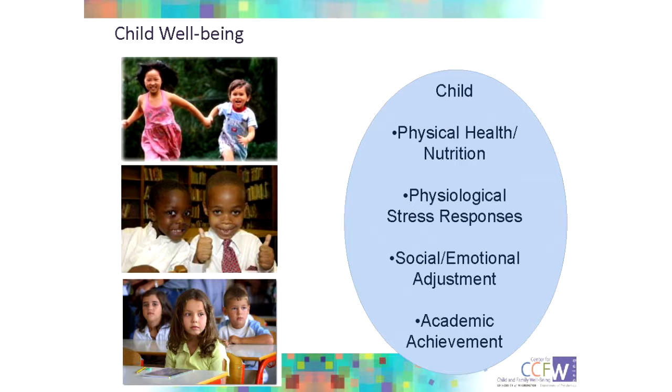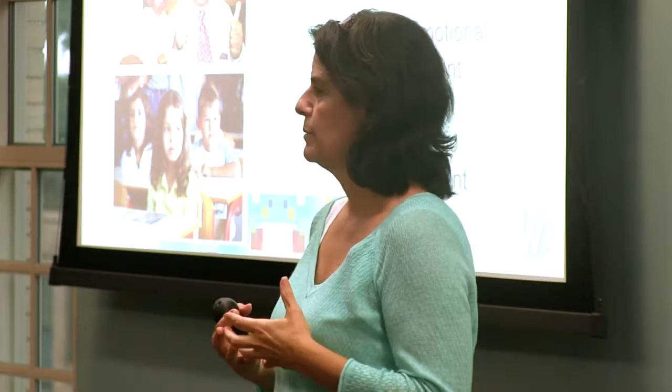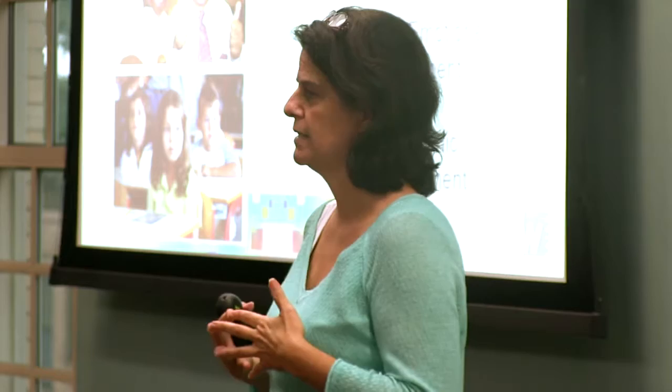When 'bio' got added to the bioecological model — Bronfenbrenner did that after maybe the first 20 years of his model — we really start to recognize that the child, the ontogenic system, is a system of interdependent and interrelated processes or systems of well-being. We try to capture that in our research, recognizing the interrelatedness among physical or physiological stress measures and indicators of social, emotional well-being and academic competence.